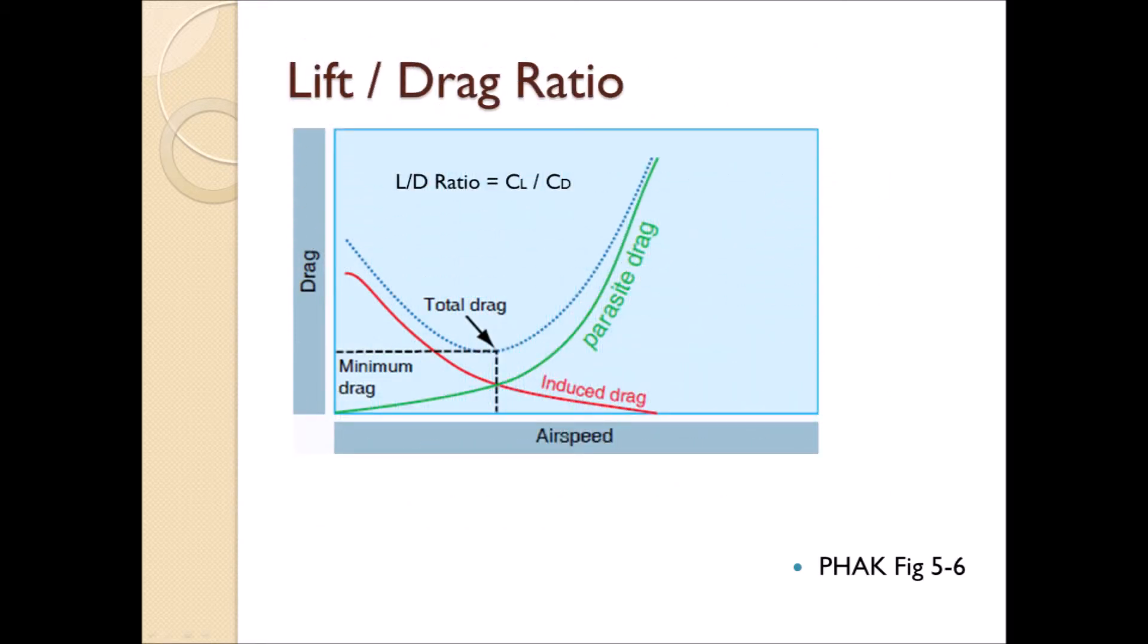Let's take a look at the other graph. We can see that with an increase of airspeed, the parasite drag or green line increases, but the induced drag or red line decreases. There is a point where the induced drag and the parasite drag are at the minimum, and this is the same point where the maximum lift-drag ratio occurs.